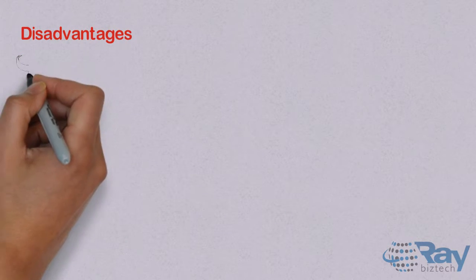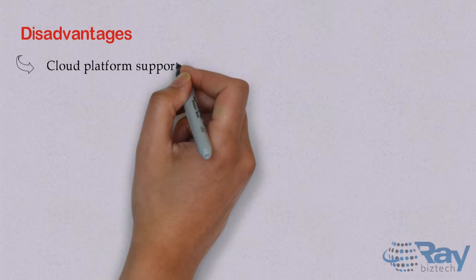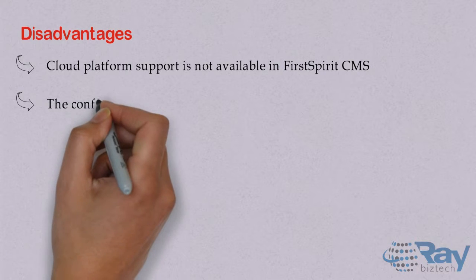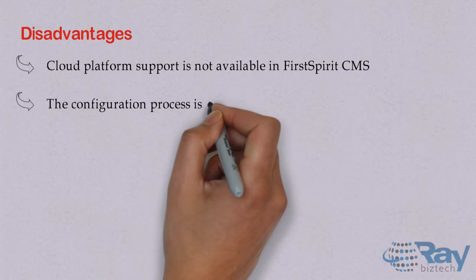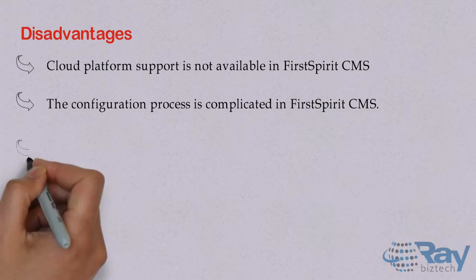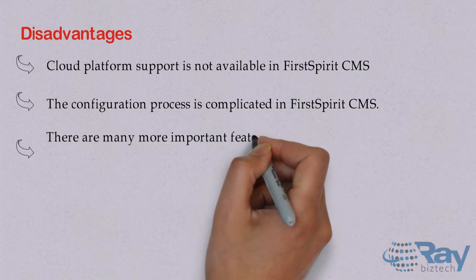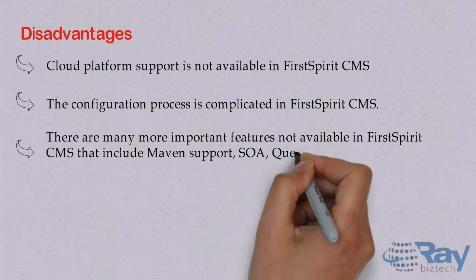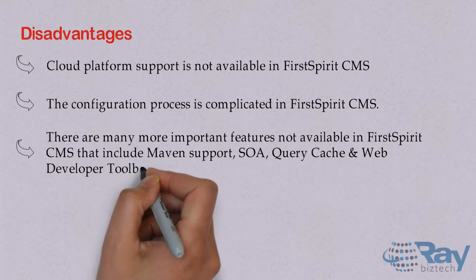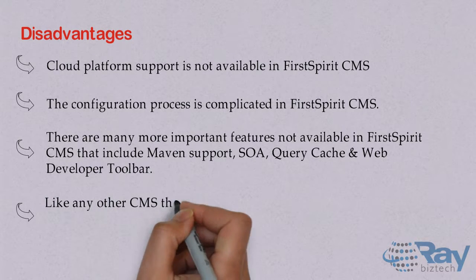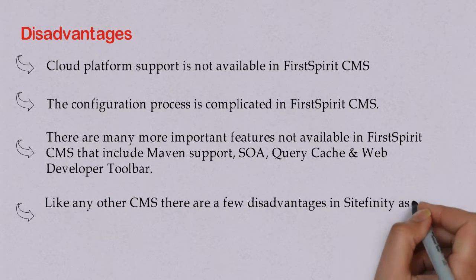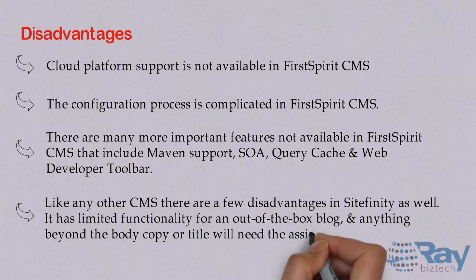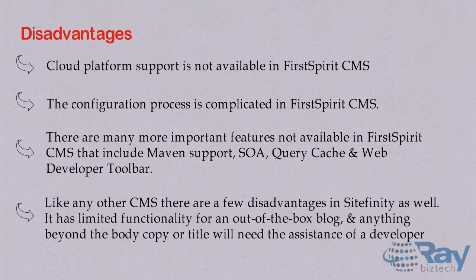Disadvantages. Cloud Platform support is not available in First Spirit CMS. The configuration process is complicated in First Spirit CMS. There are many more important features not available in First Spirit CMS, including Maven support, SOA, Query Cache, and Web Developer Toolbar. Like any other CMS, there are also a few disadvantages in Sightfinity. It has limited functionality for an out-of-the-box blog, and anything beyond the body copy or title will need the assistance of a developer.